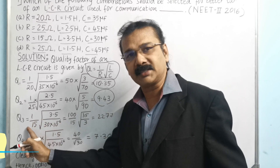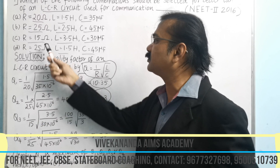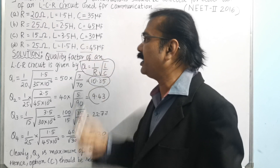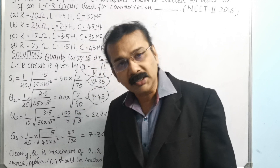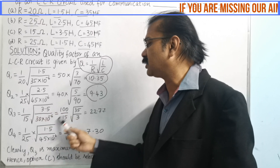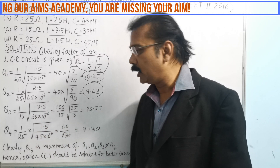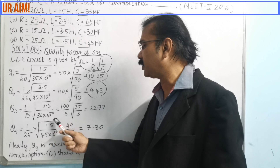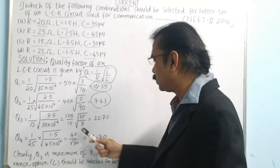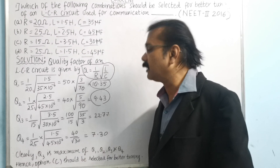For the third case, the value of R is 50, the value of L is 3.5, and the value of C is 30 μF. If you substitute again in this formula, we get (1/50) × √(3.5 / (30 × 10⁻⁶)). If you simplify, you will get Q₃ = 22.77.